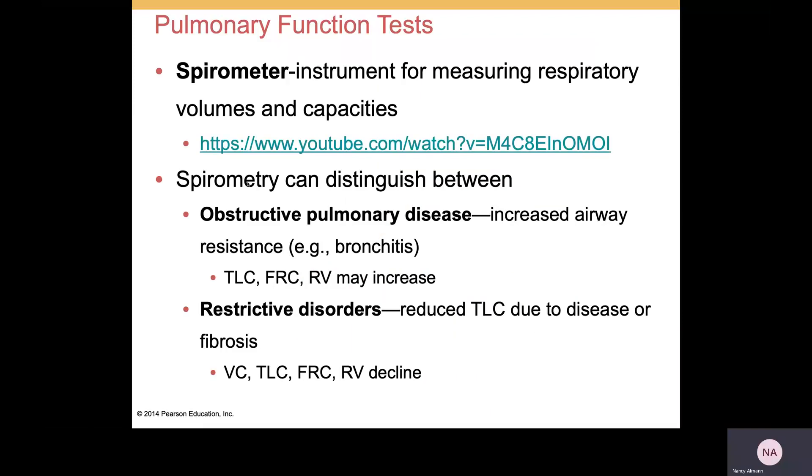We use spirometers to check pulmonary functions, and it's going to measure volumes and capacities. And there's a short video there. Spirometry is going to be important because it can distinguish between a couple of different types of respiratory issues. Obstructive pulmonary disease, like bronchitis, for example. If you have increased airway resistance, you might have increased total lung capacity. Restrictive disorders will reduce total lung capacity due to disease or fibrosis. So those numbers will decline.